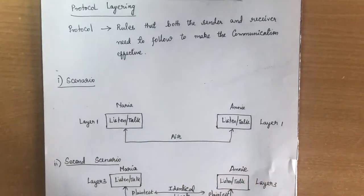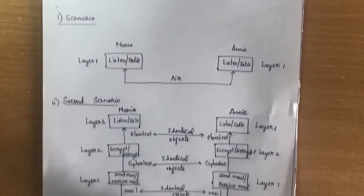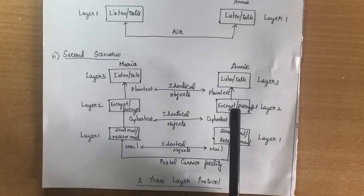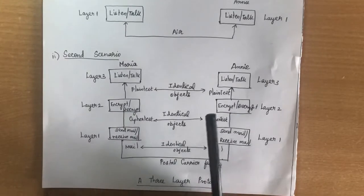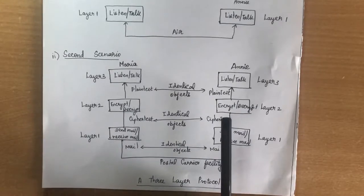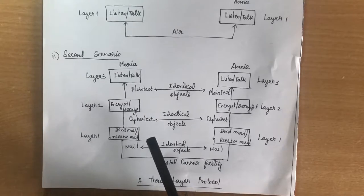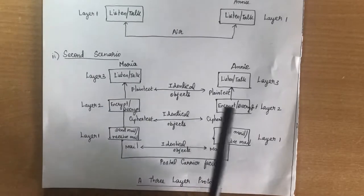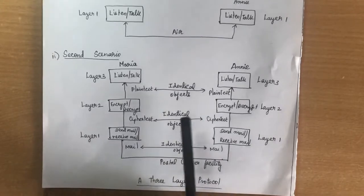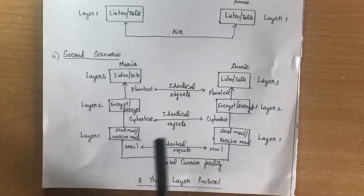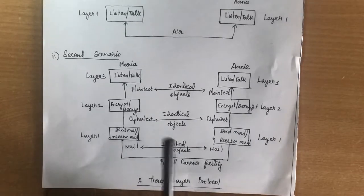The second scenario: suppose Maria stays in the same place but Annie moves to a different place. They want to start a new innovative project and keep it confidential. Since they are no longer in the same location, they thought of using the postal service to continue their project.